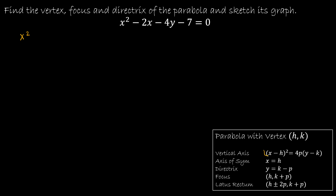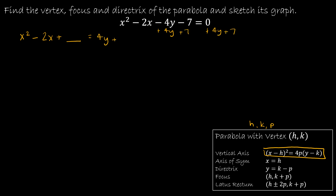What I'm trying to do is turn it into standard form so I can identify H, K, and P — those are all the values I need to find everything. To do that, I need it in the correct form. So I'm going to write x² minus 2x and leave a little space, then move everything else to the opposite side by adding 4y and adding 7 to each side. Now I'm going to complete the square on the left-hand side — everything in this video is review of things you've learned in other classes.